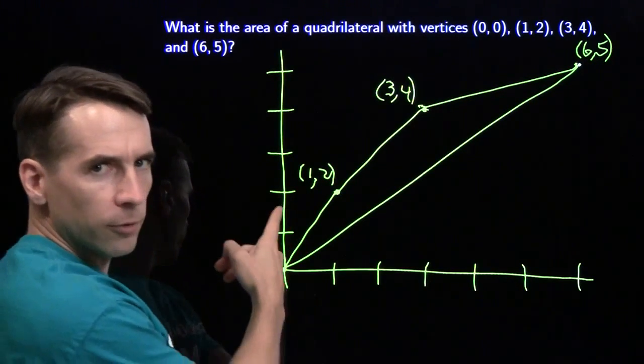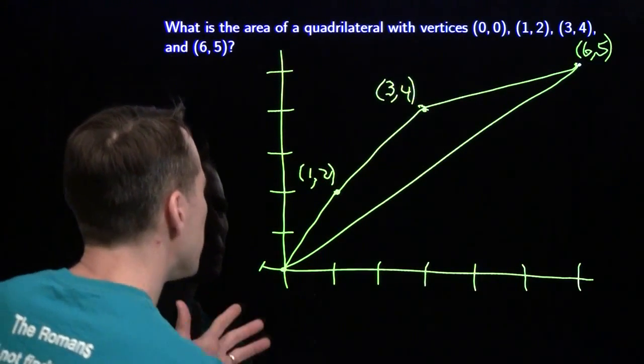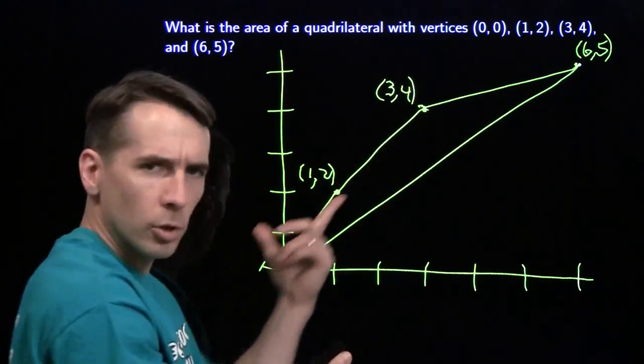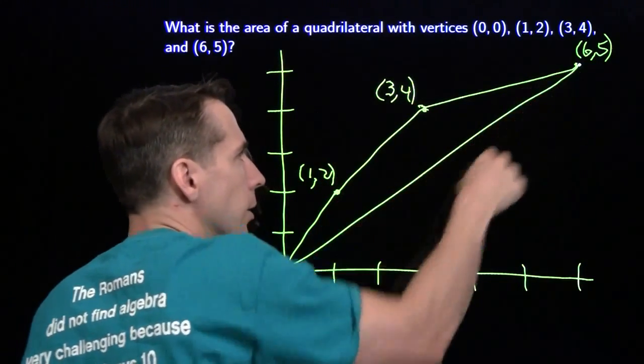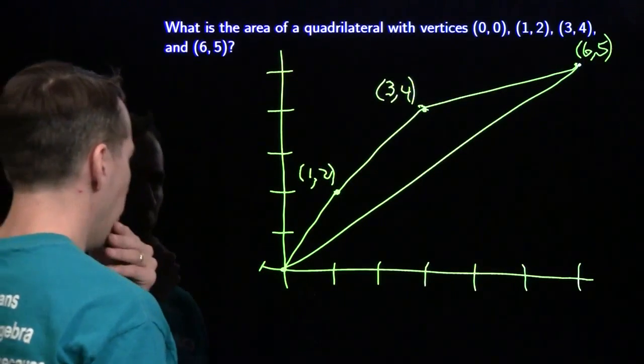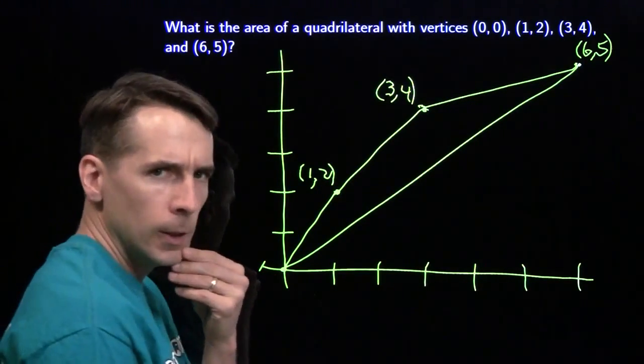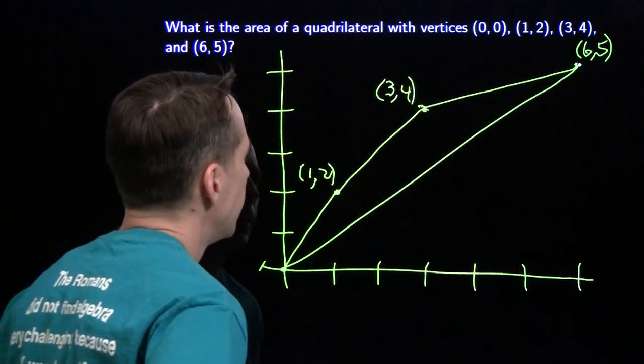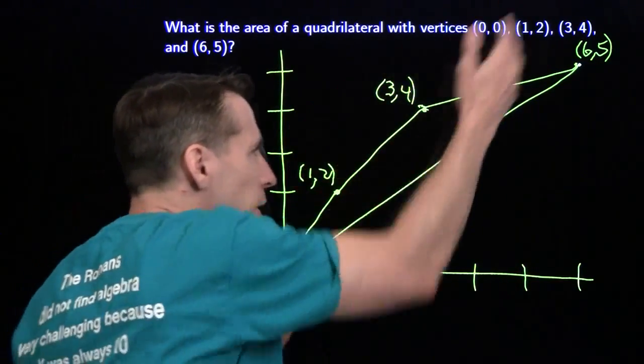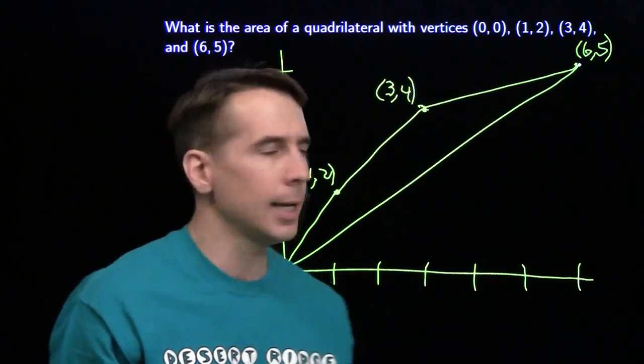We don't have a formula for this. Maybe it's a trapezoid. The slope here, up 2 over 2, the slope is 1. This slope is not 1. We're up 5 over 6. Not a trapezoid. No formula. What are we going to do? Well, when I see a weird figure like this, I start thinking about how can I express the weird figure in terms of figures I can handle?